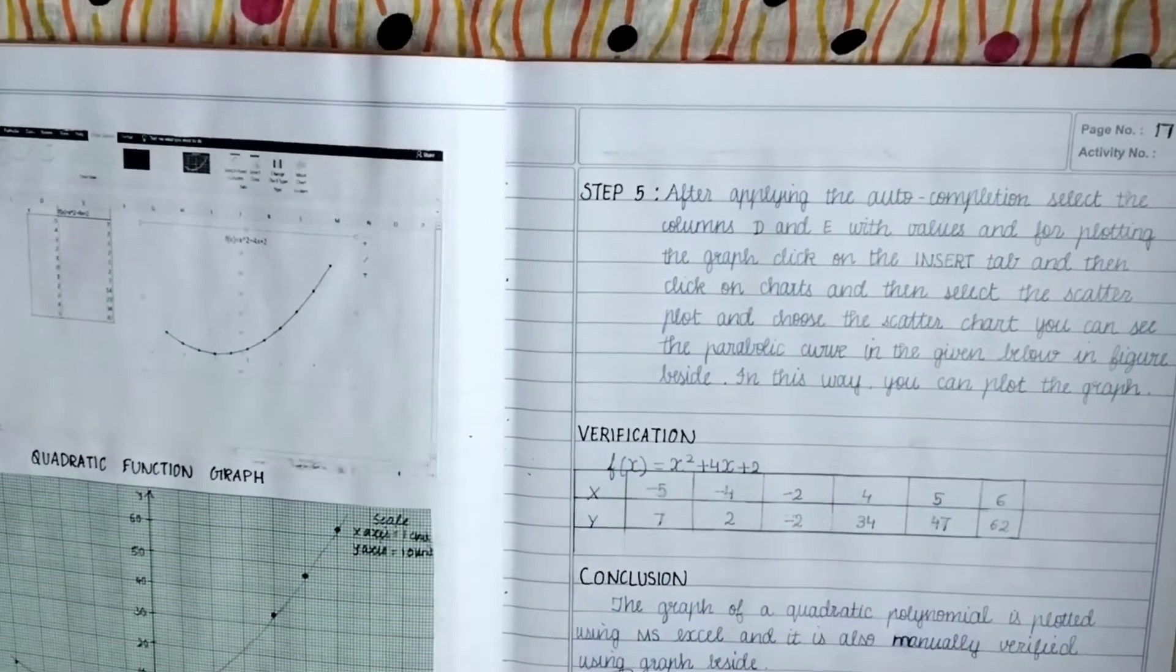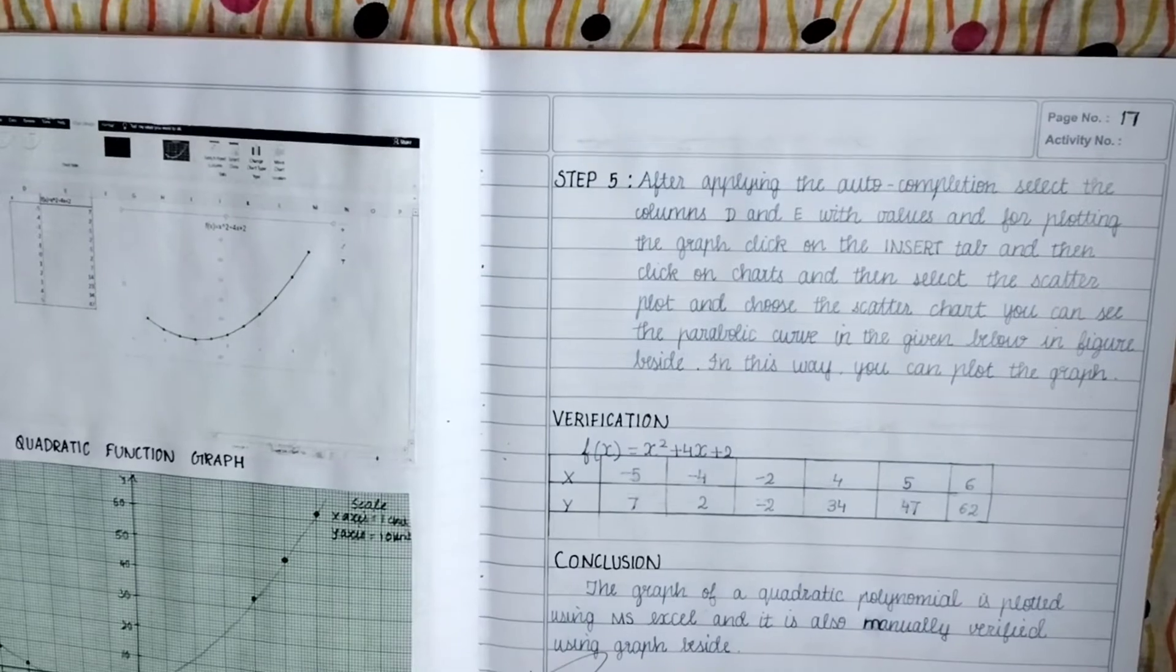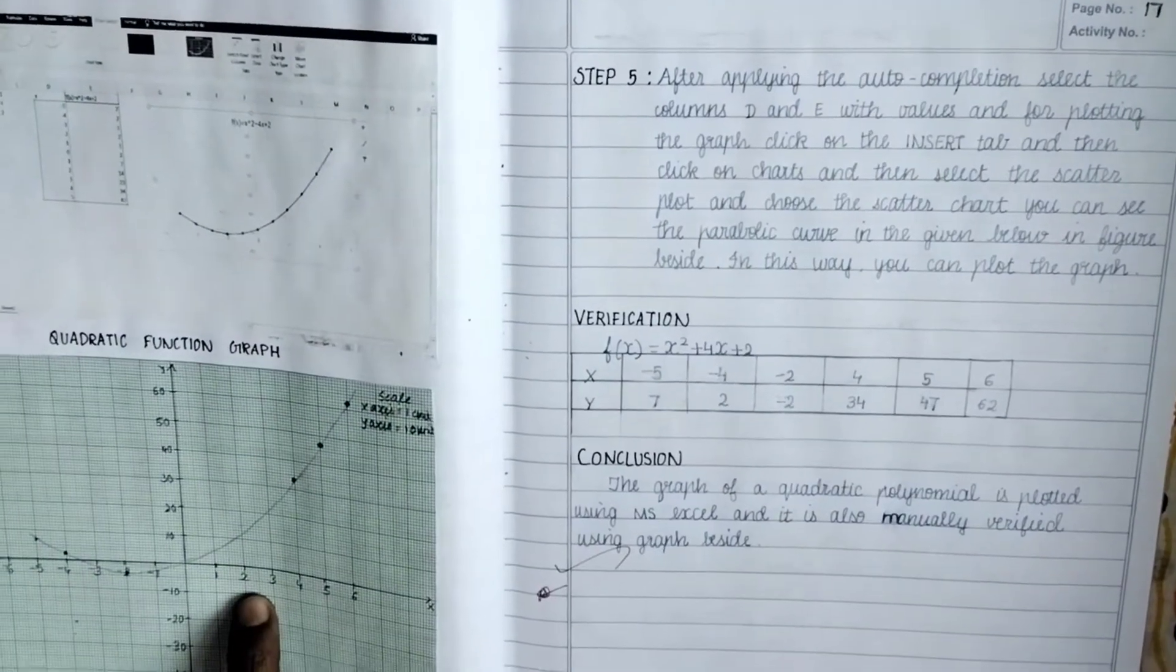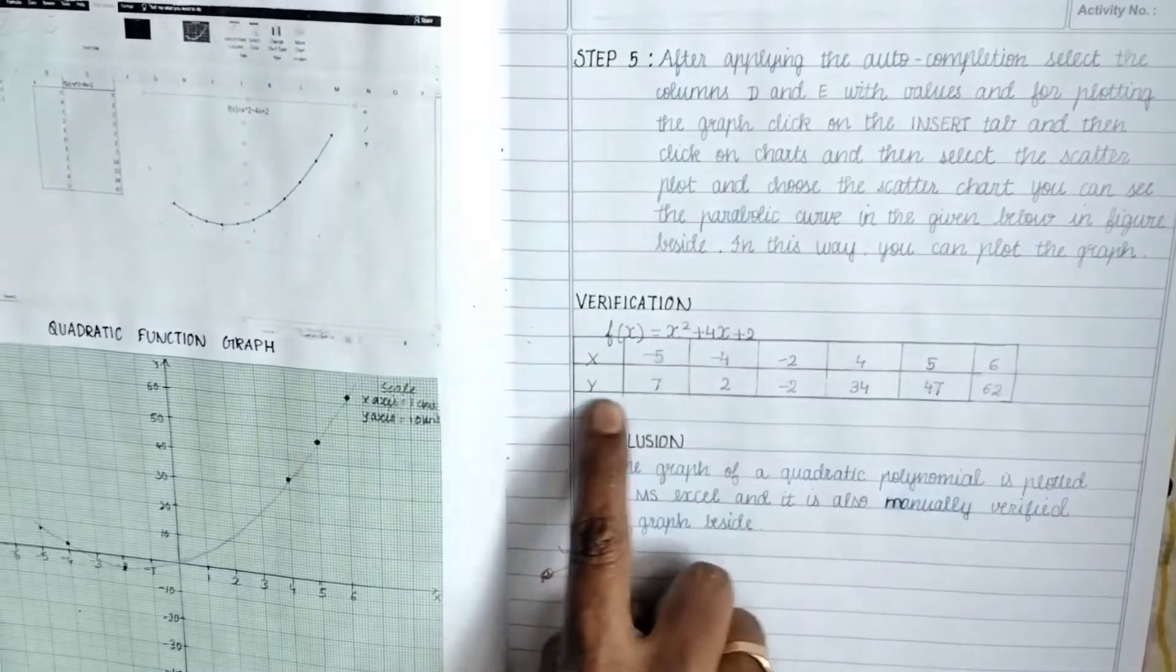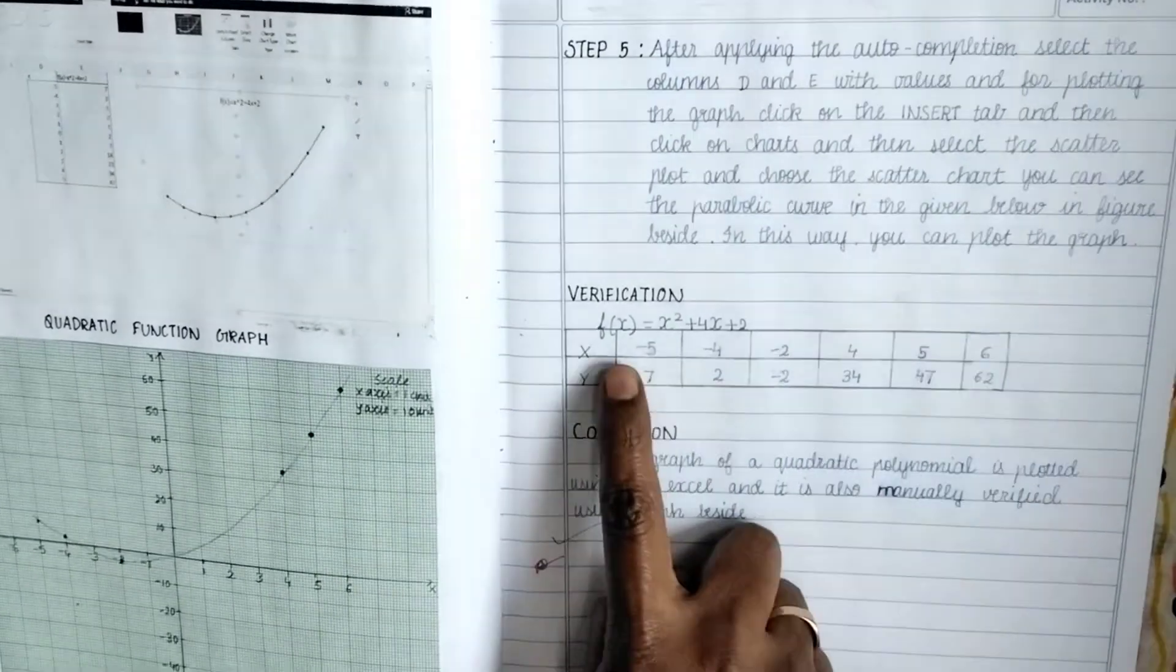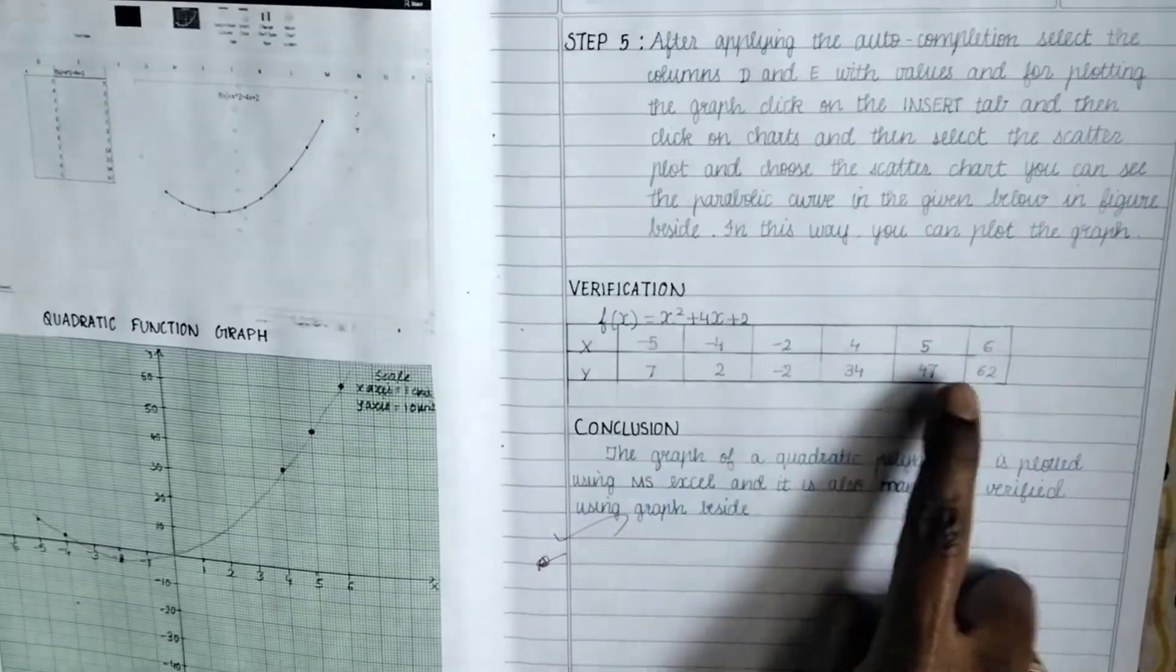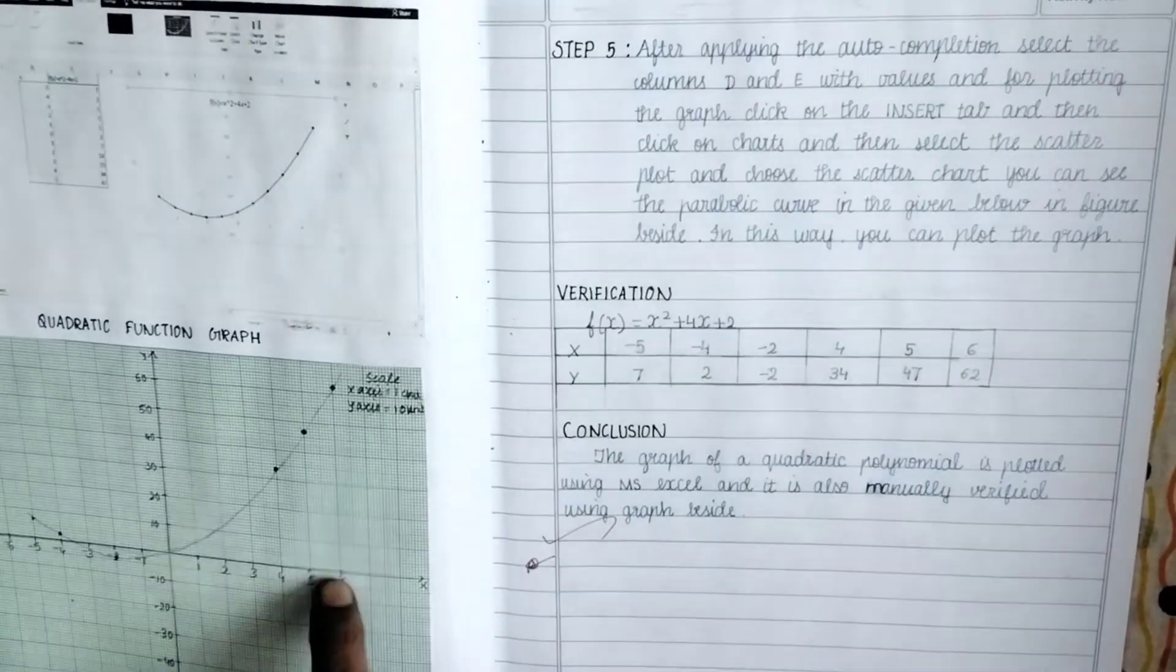And this one we have also verified it graphically, manually also we have done. See this graph and this graph will look alike. Before plotting this we verify, just like how we plot a graph we give points of x and we find the points of y, we plot it. Same way we have done, see this and this will look alike, then there's a conclusion.